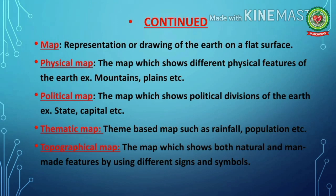Number eight: physical map means the map which shows different physical features of the earth, for example mountains, plains, etc. Number nine: political map means the map which shows political divisions of the earth, for example state, capital, etc. Number ten: thematic map means a theme-based map, such as rainfall, population, etc. Number eleven: topographical map means the map which shows both natural and man-made features by using different signs and symbols.